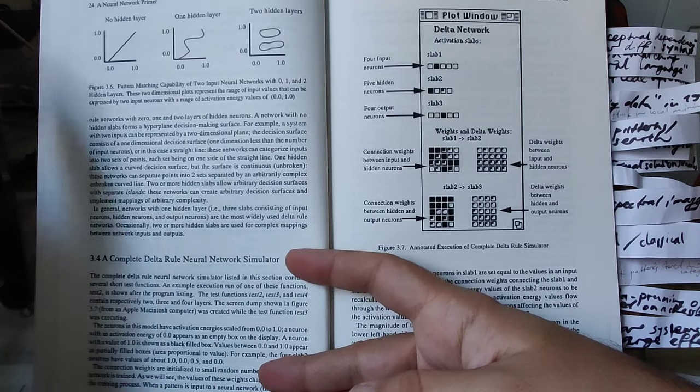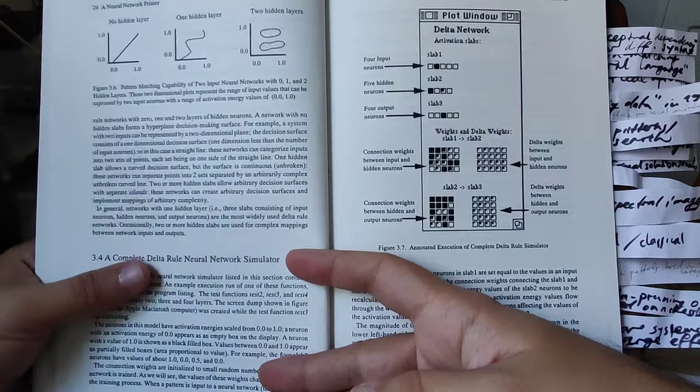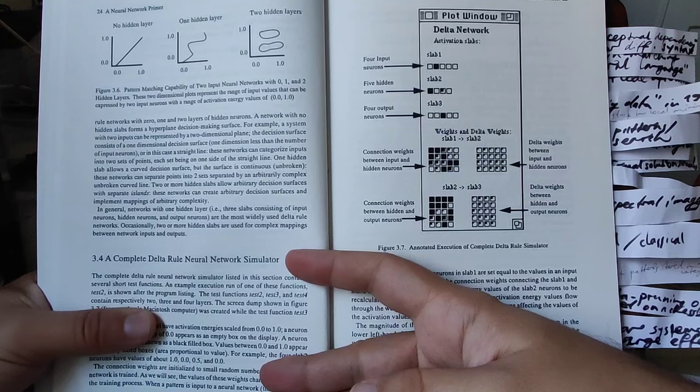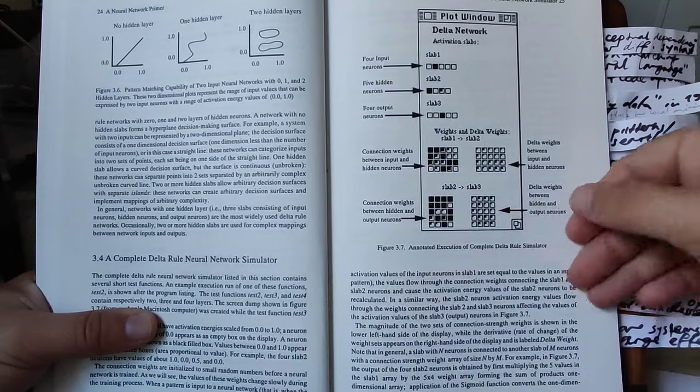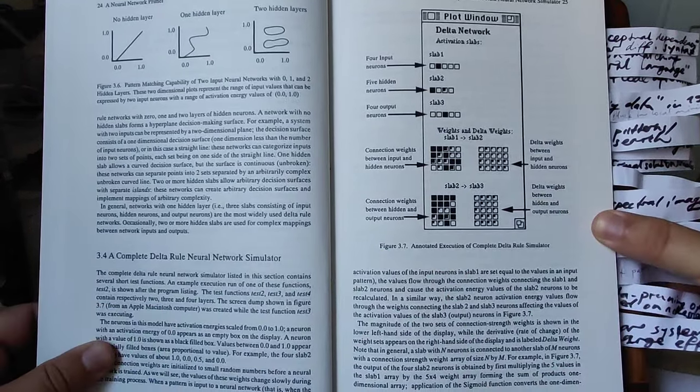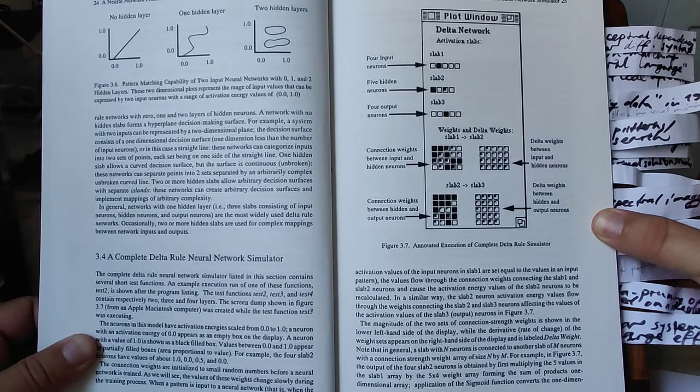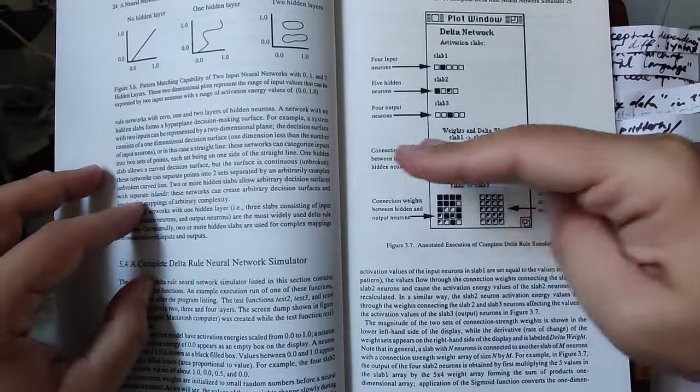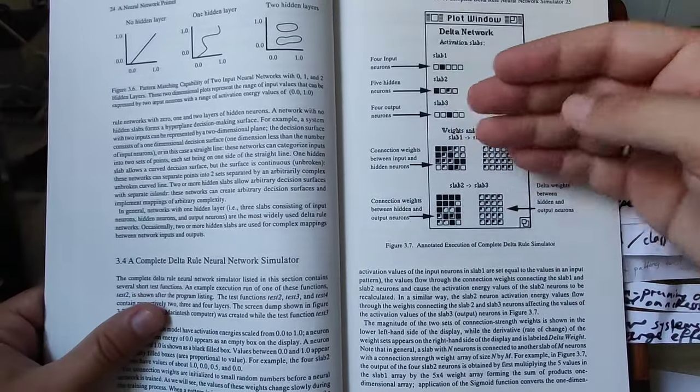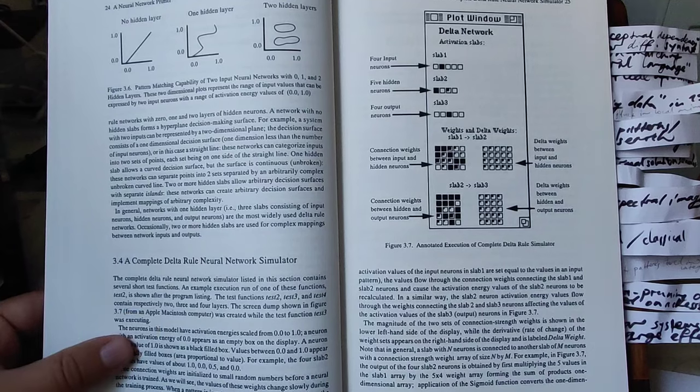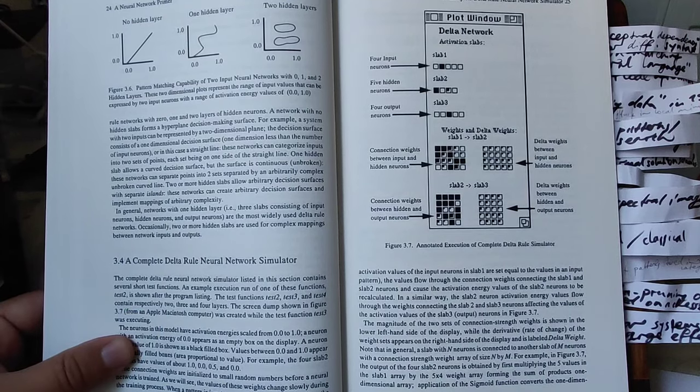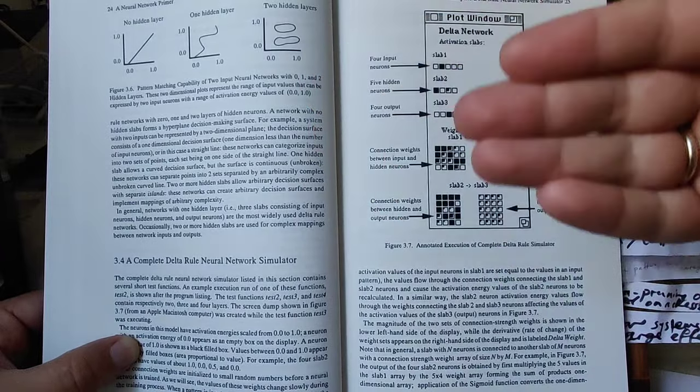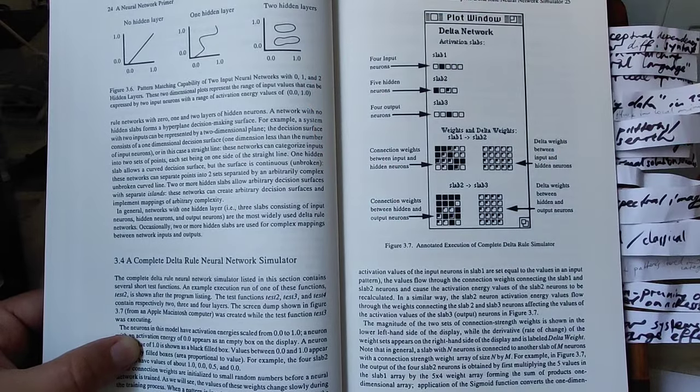With one hidden layer you cannot isolate regions unfortunately, so you wouldn't be able to compute things like the XOR function. This is showing you how simple networks are not able to compute the XOR function, which the simplest networks in the very beginning could not implement but which is not theoretically limited.